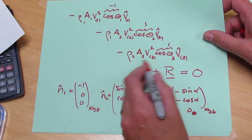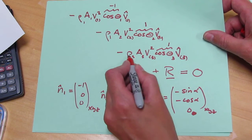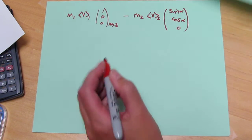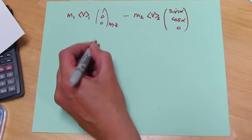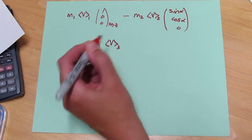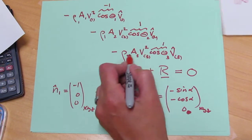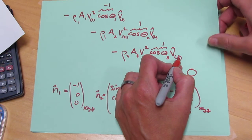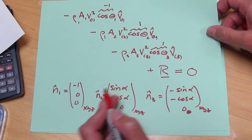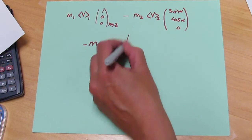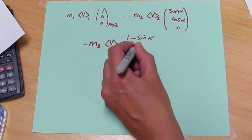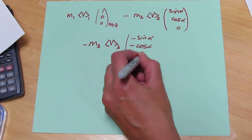The third term is minus M3 times V at the 3 surface minus M3 times V times a 1 times V3. And V3 is parallel to N3, so it's times minus sine alpha minus cos alpha 0.